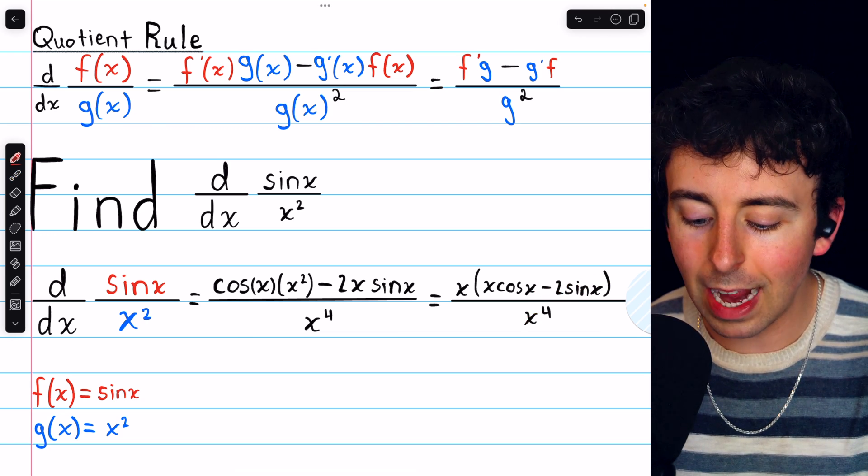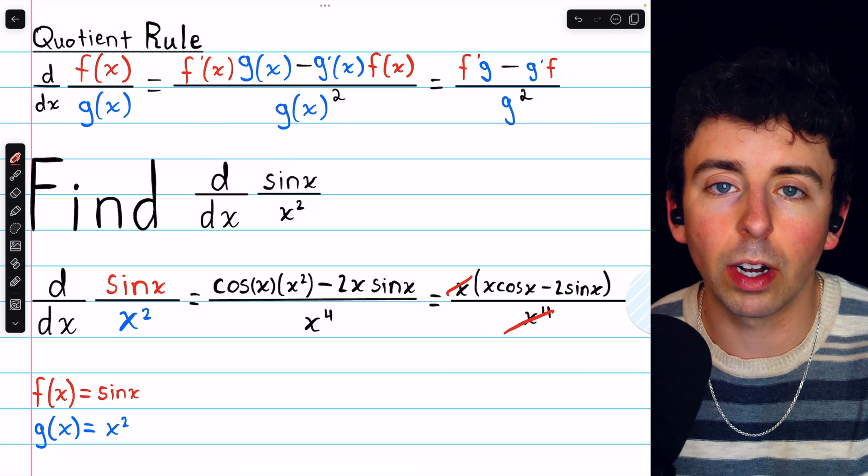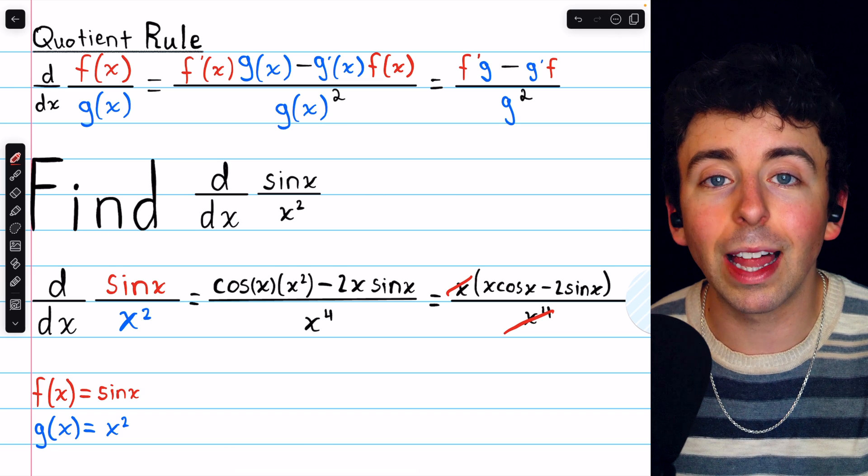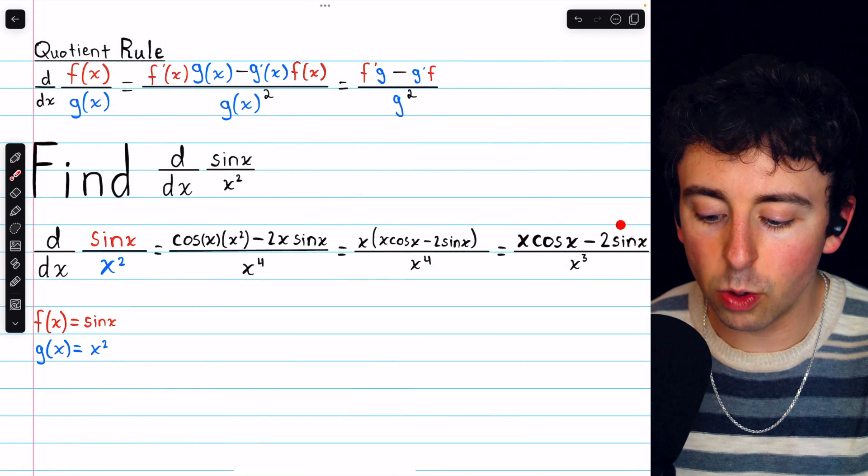In the denominator, we still have x to the 4, but now we have a factor of x in the numerator that we can cancel out with one of those factors of x in the denominator. So now we'll have three factors of x in the denominator, and that gets us to our final answer.